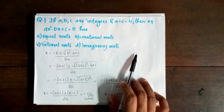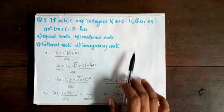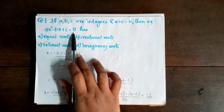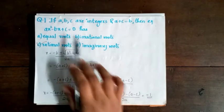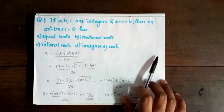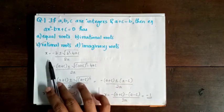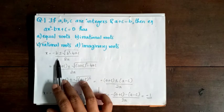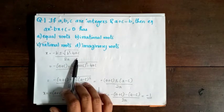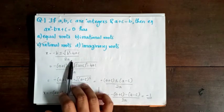a, b, c are integers which satisfy this equation. For this quadratic equation, how do we check the roots? We use x equals minus b plus or minus root of b² minus 4ac divided by 2a.